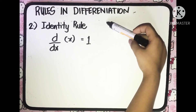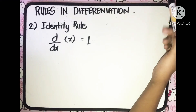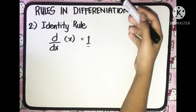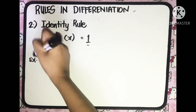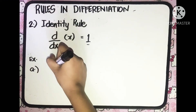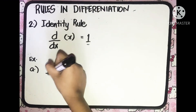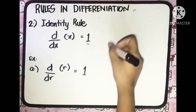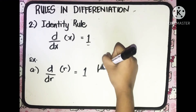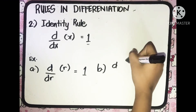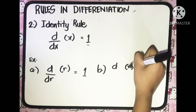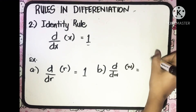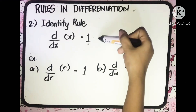The second rule is the identity rule, wherein the derivative of x with respect to x is equal to 1. For example, the derivative of r with respect to r is equal to 1. Similarly, the derivative of w with respect to w is also equal to 1, according to the identity rule.